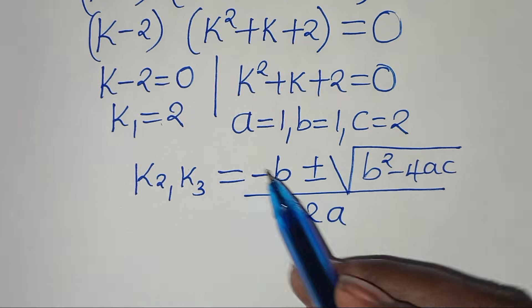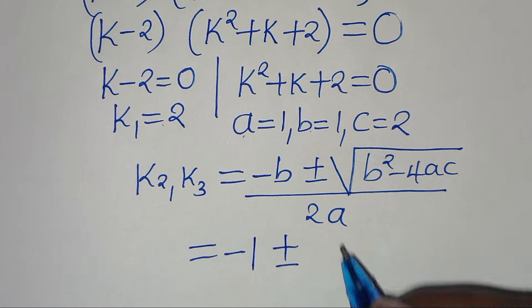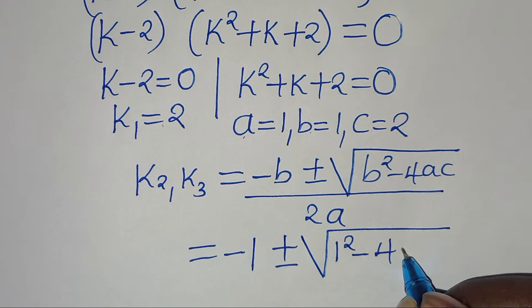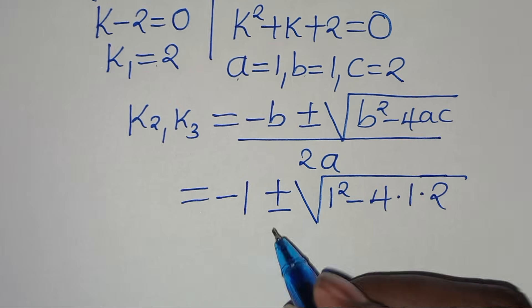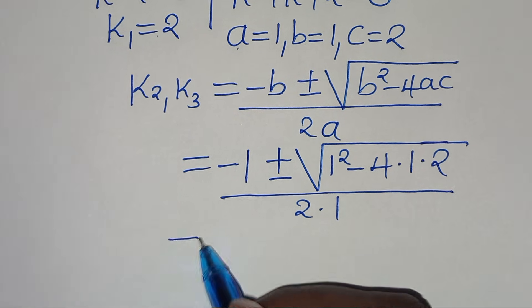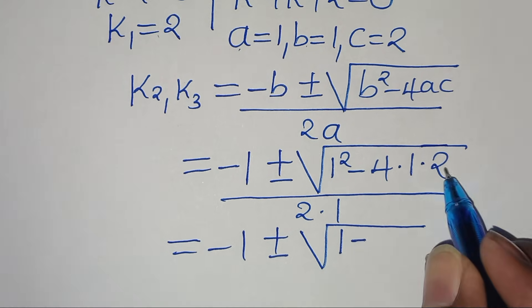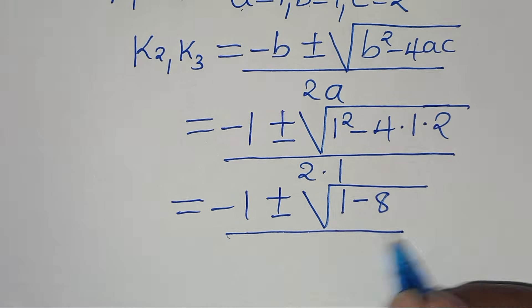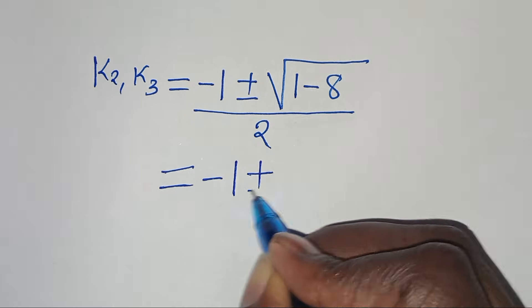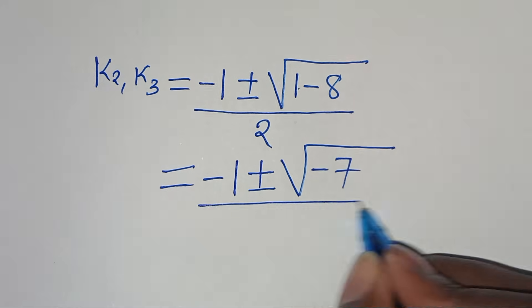Let's substitute the values of a, b, and c into the formula, so that we have minus 1 plus or minus the square root of 1 squared minus 4 times 1 times 2, divided by 2 times 1. This equals minus 1 plus or minus the square root of 1 minus 8, divided by 2. So we have minus 1 plus or minus the square root of negative 7, divided by 2.